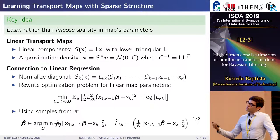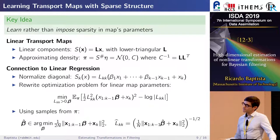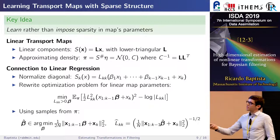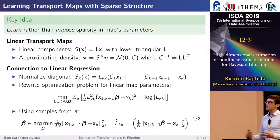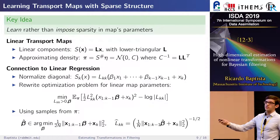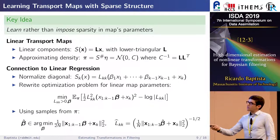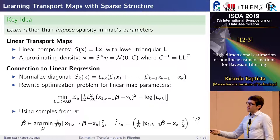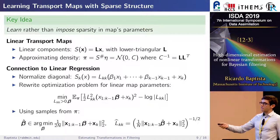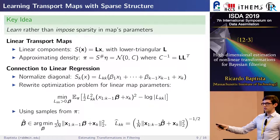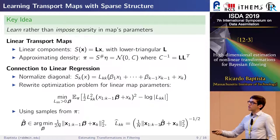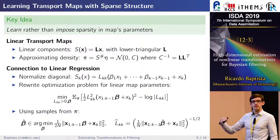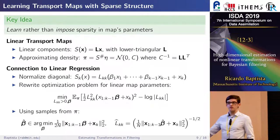We'll show how by first looking at linear transport maps — functions S written as a lower triangular matrix L times a vector x. These linear maps can only characterize Gaussian distributions, where the inverse covariance matrix is LL^T. For any component of this linear map inserted into the optimization problem for learning each map component, we get a simple linear regression problem for normalized coefficients and the diagonal.